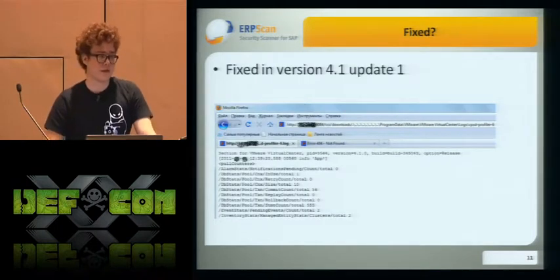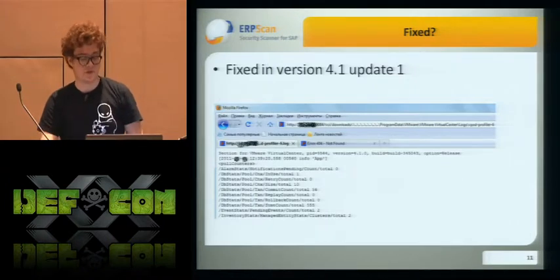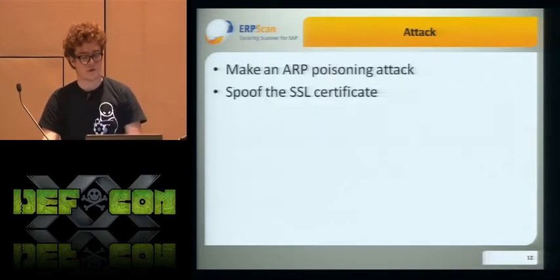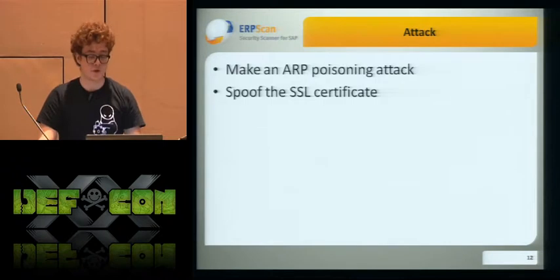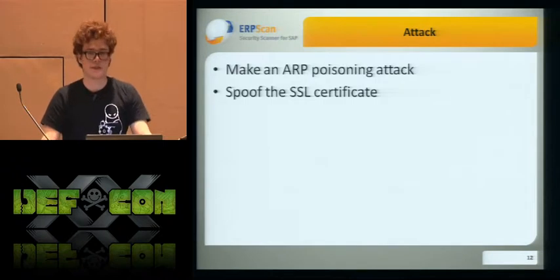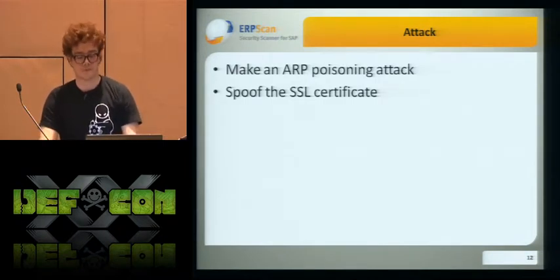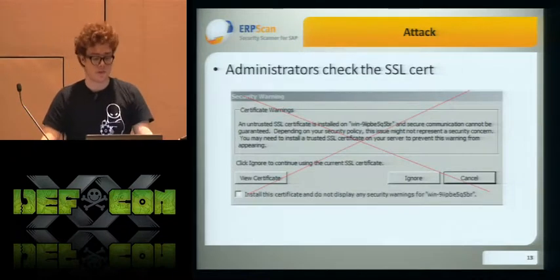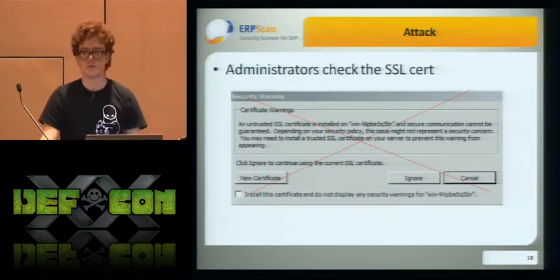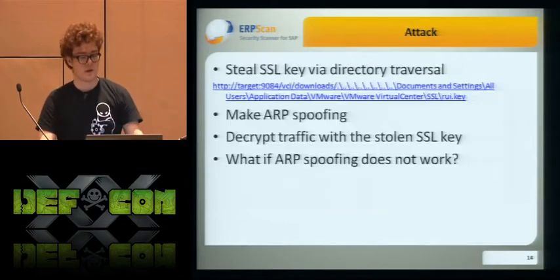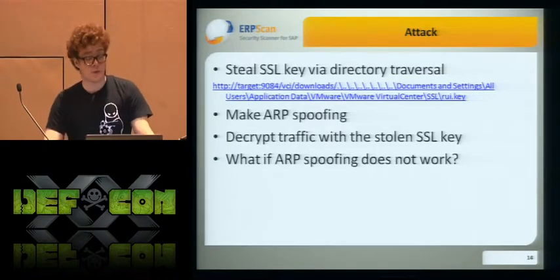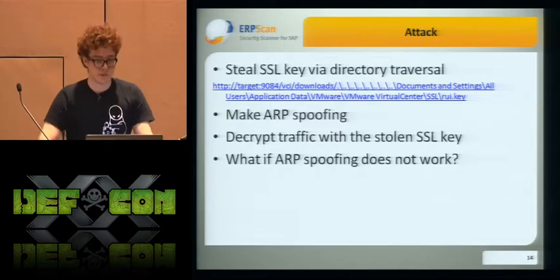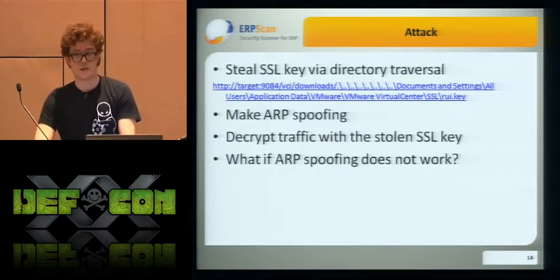But the log file contains IP addresses of administrators. If it contains IP addresses of admins, we can try to use a classic attack: ARP poisoning, spoof the SSL certificate, and sniff traffic. But the administrators of this network were really clever — they added the certificate to trusted and didn't click the "ignore" button. So that doesn't work. So we found another way: we just steal the key via directory traversal, do ARP poisoning, and decrypt the traffic.